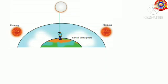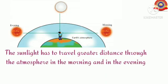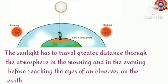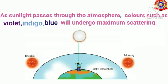Can you see which are the occasions when sunlight has to travel a greater distance through the atmosphere before reaching the eyes of an observer on the Earth? Yes, it is in the morning and in the evening. The sunlight has to travel a greater distance through the atmosphere in the morning and in the evening before reaching the eyes of an observer.